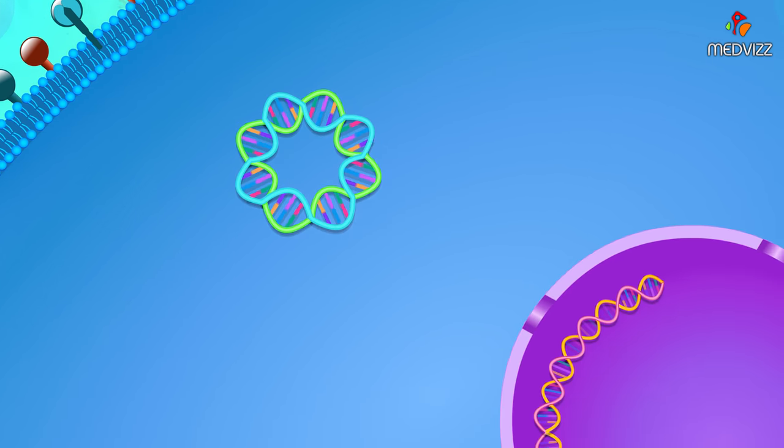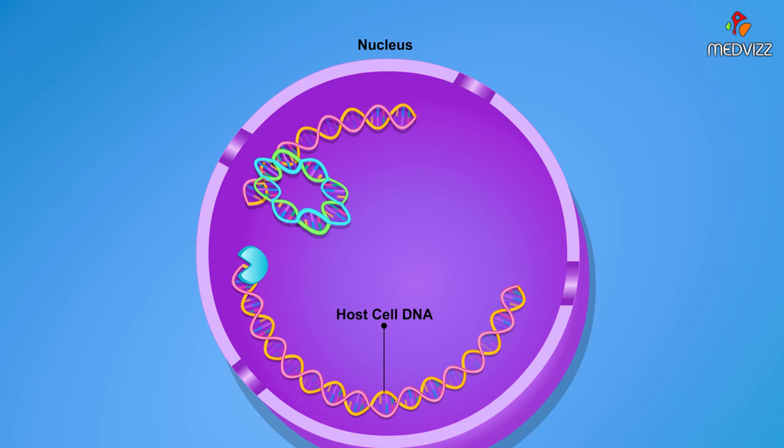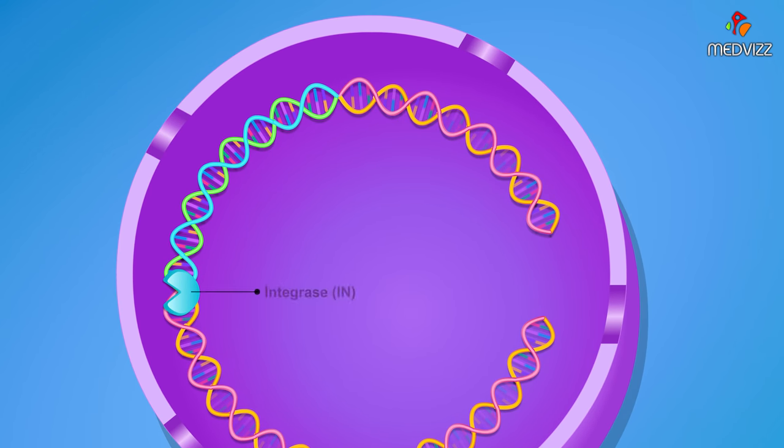The resulting circular DNA is then moved to the nucleus and inserted into the host cell chromosome by the viral integrase (IN) enzyme.